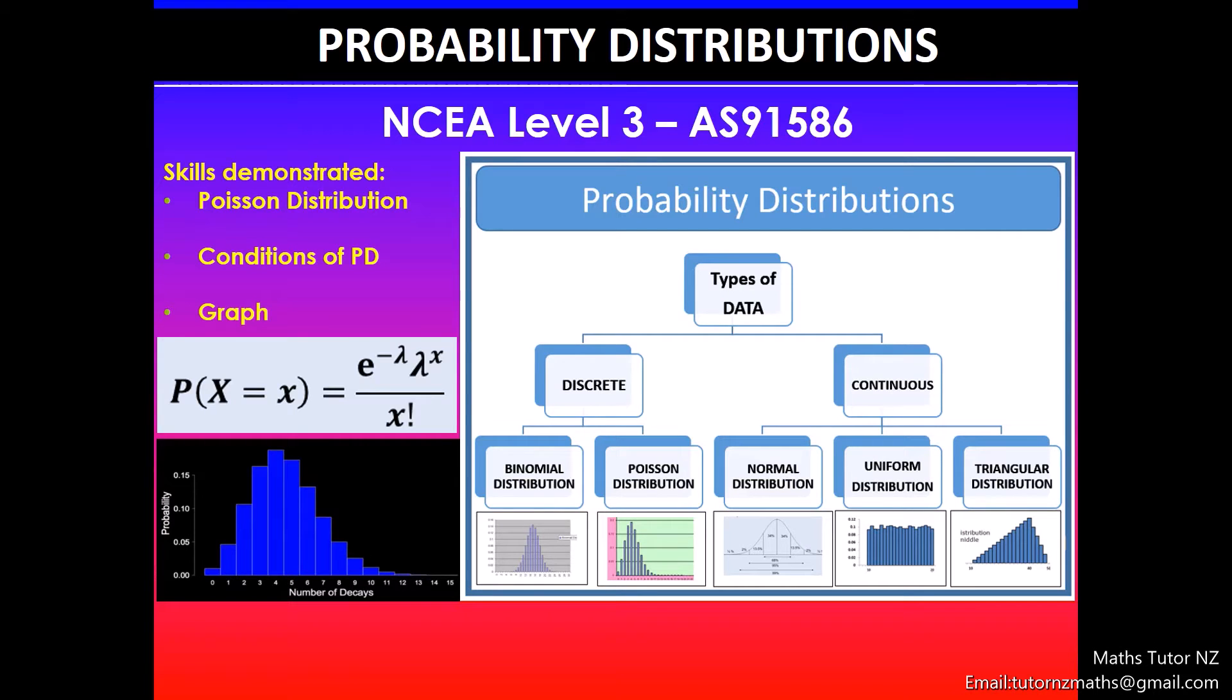Greetings everyone. In this video, we'll be looking at NCEA Level 3 probability distributions achievement standard. I'll be looking at Poisson distribution, the conditions of Poisson distribution, and the graph that models this distribution.